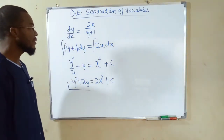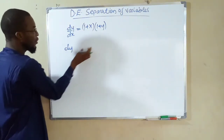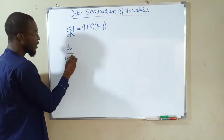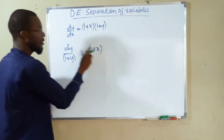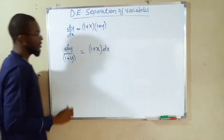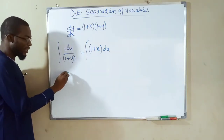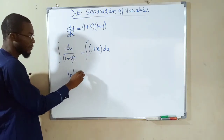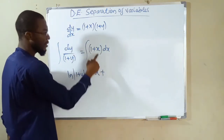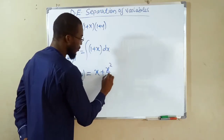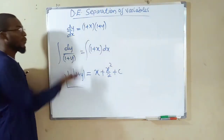Now let us look at the next question. We separate the variables: dy over (1 + y) on the left-hand side, and (1 + x) dx on the right-hand side. Integrating both sides: the left gives the natural log of the absolute value of 1 plus y, and the right gives x plus x squared over 2 plus the constant of integration. This is the general solution for this differential equation.